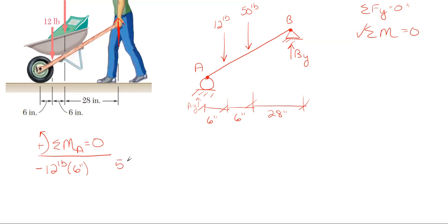Then the 50 pounds - its perpendicular distance to point A is 12 inches. It's also rotating clockwise about point A, so also negative. Then lastly I have B sub y, which has a total distance to point A of 40 inches as a horizontal distance because it's a vertical force. It rotates counterclockwise about point A, so it's positive. That's all I have for my moment about A.